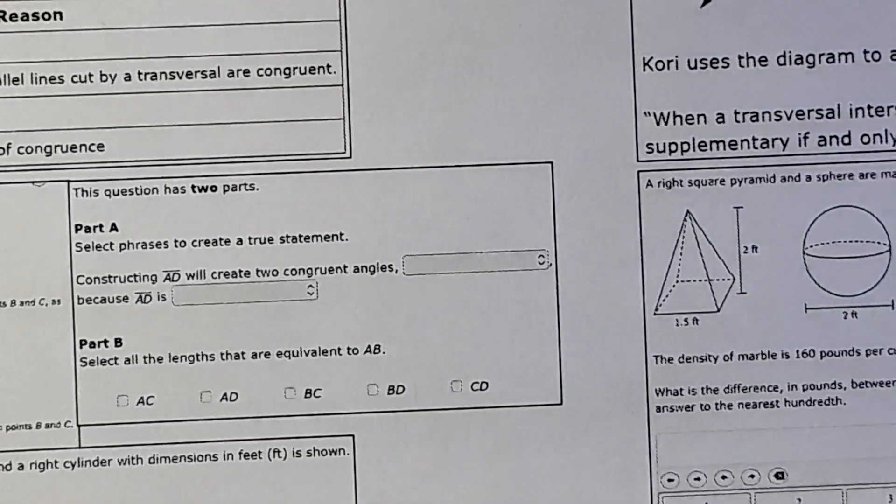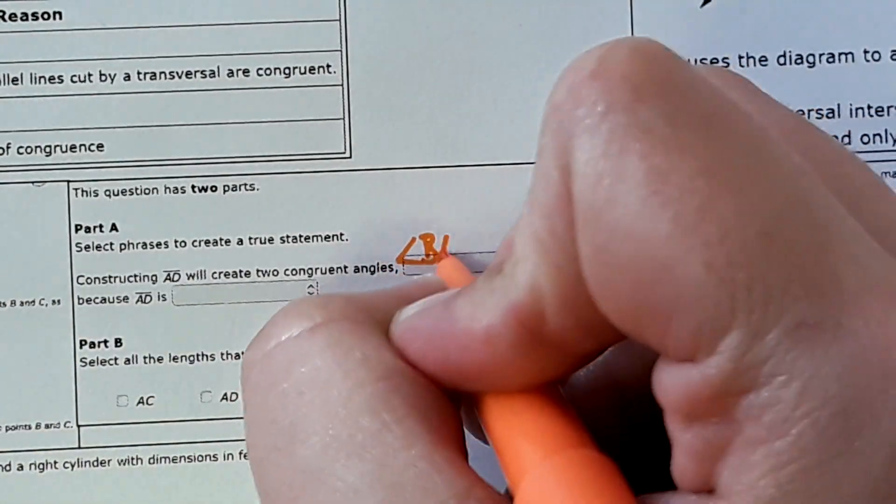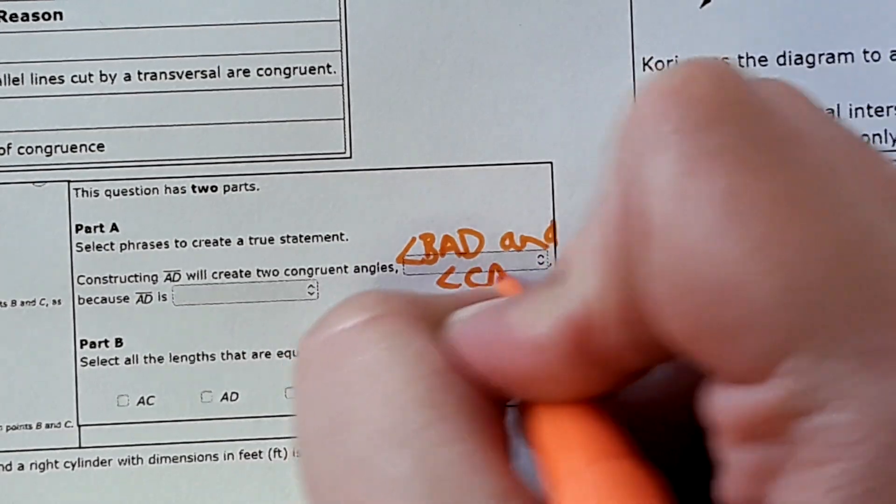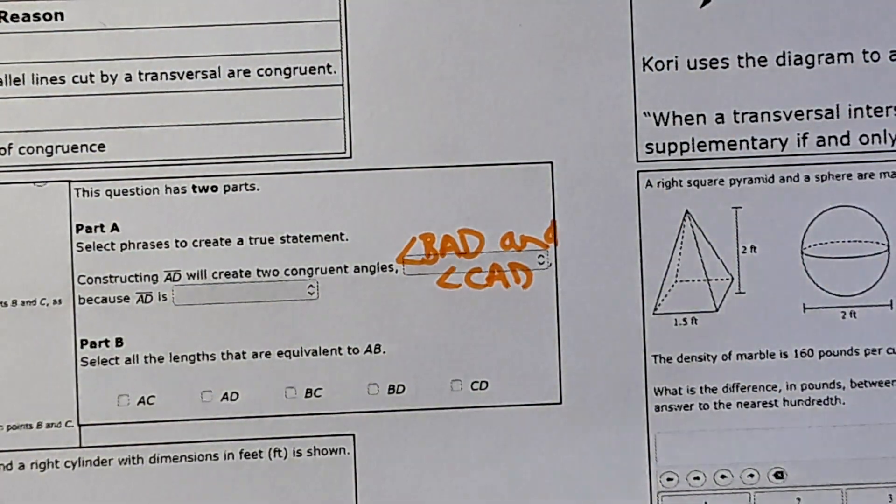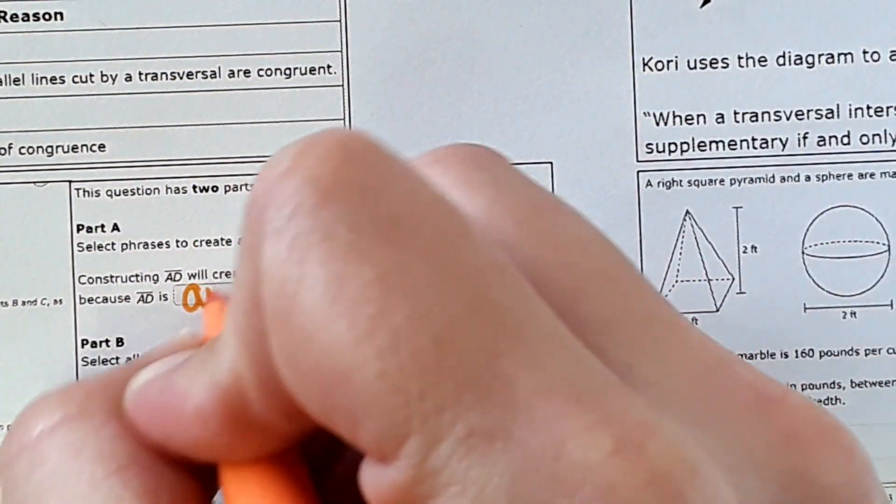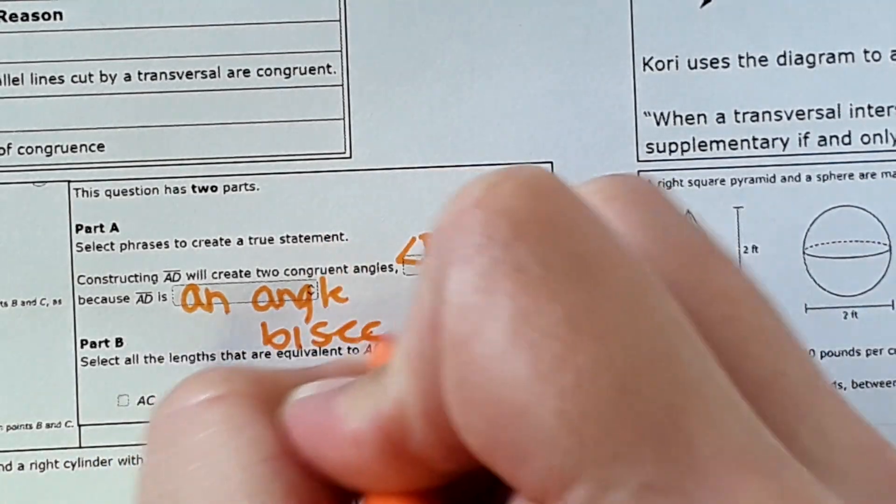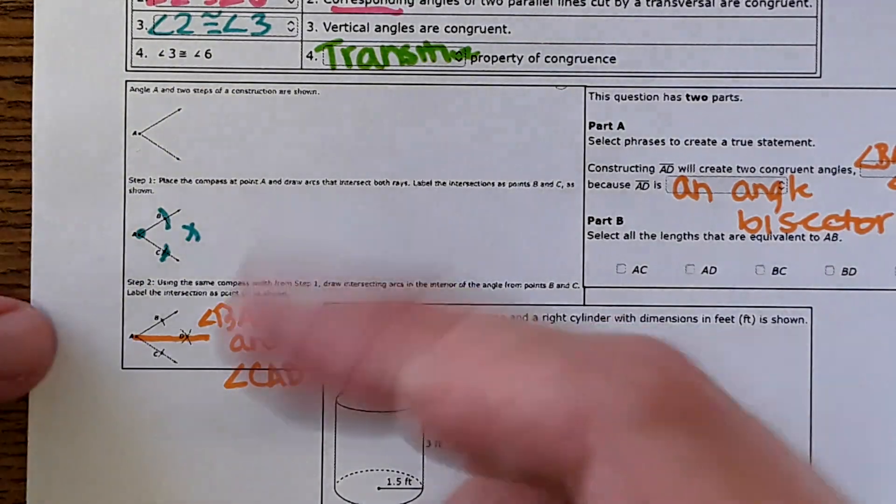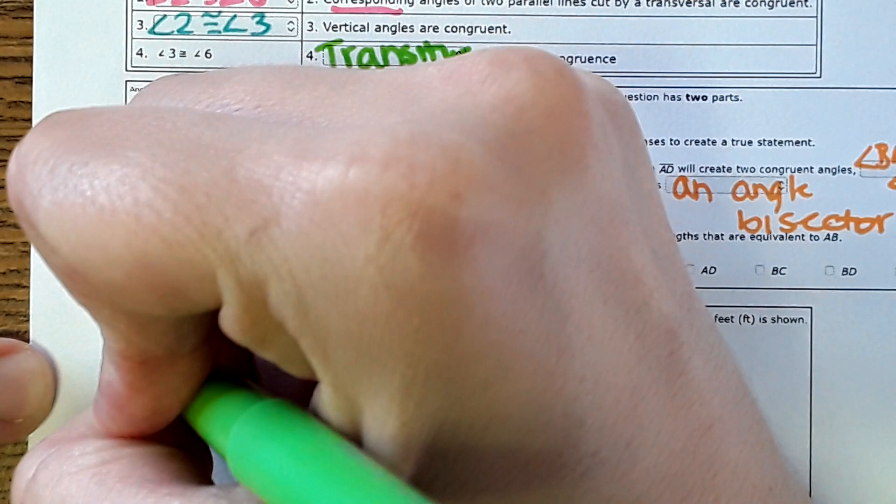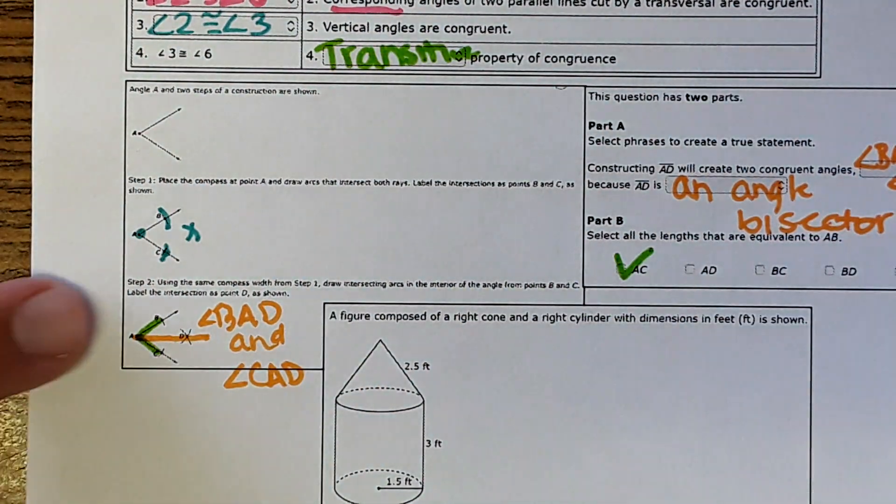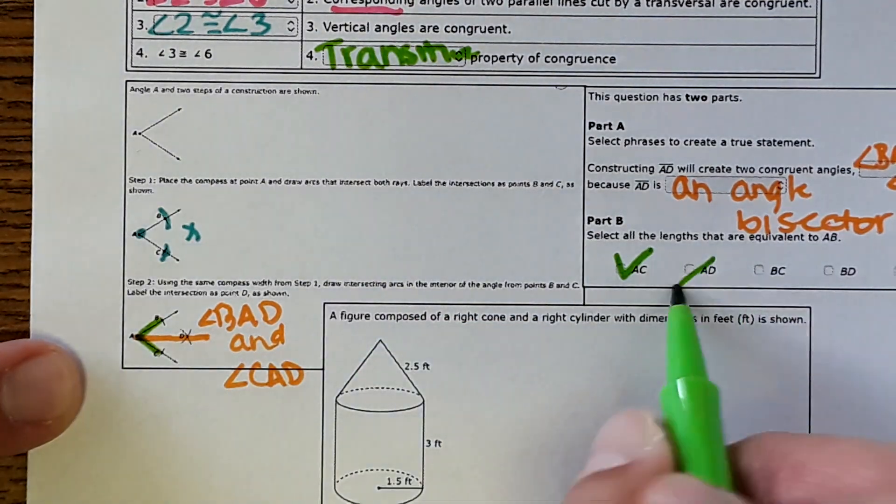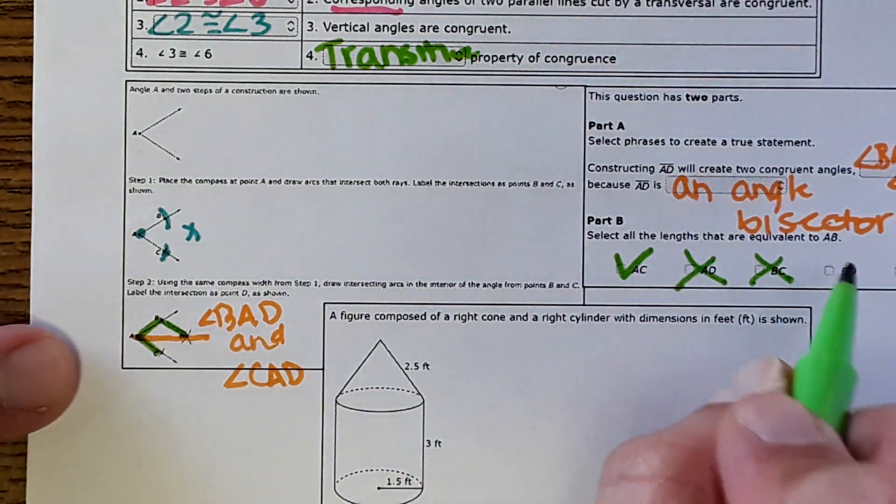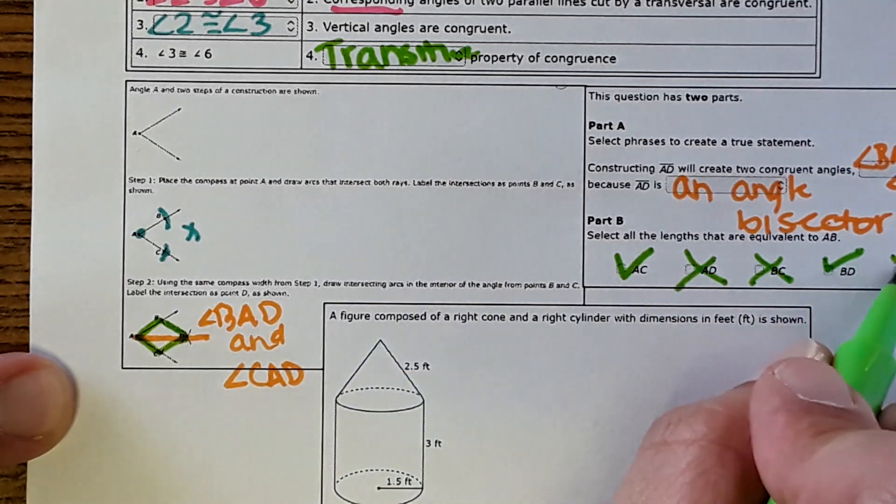That's what you would choose out of the drop down. There would be different angle selections and you choose the one that's angle BAD and angle CAD, and the reason is because AD is an angle bisector. Then it says select all the lengths that are equivalent to AB. AB is right here. Another segment congruent to that would be AC, which we can choose. AD? No, that looks longer. BC across this way? No. BD would be this length right here, which you use the compass to actually make that length the same, and then CD would also be the same as well because you use the compass to make that mark with the same measure.